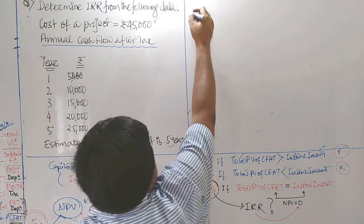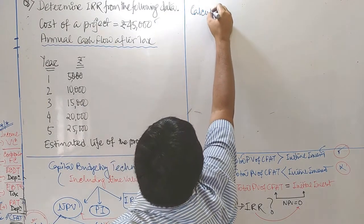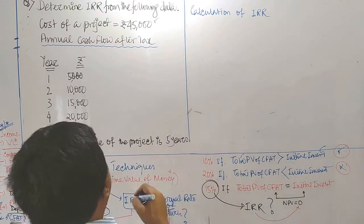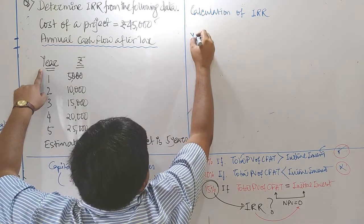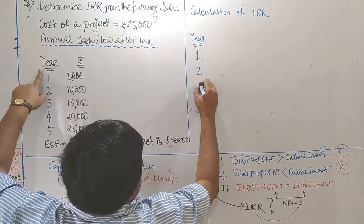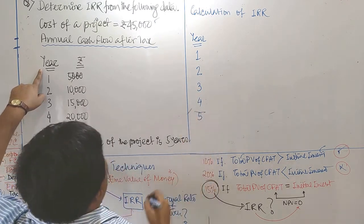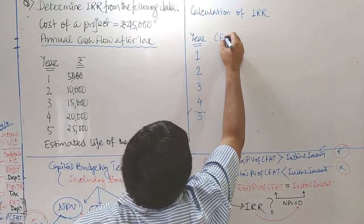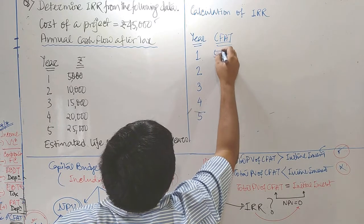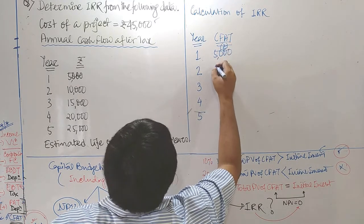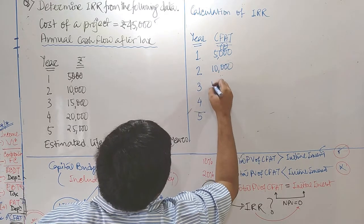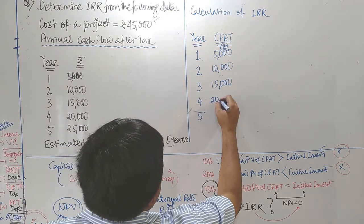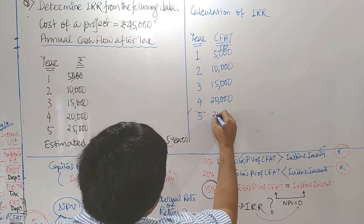Calculation of IRR — Internal Rate of Return. Five specific years of CFAT are provided to us. At first year it is Rs. 5,000; second year Rs. 10,000; third year Rs. 15,000; fourth year Rs. 20,000; and fifth year Rs. 25,000.